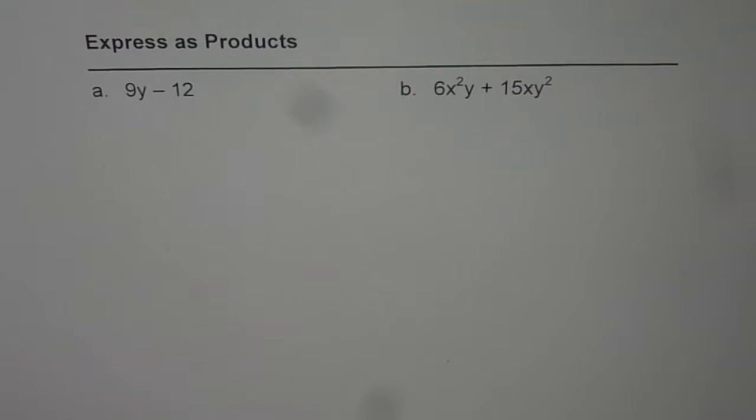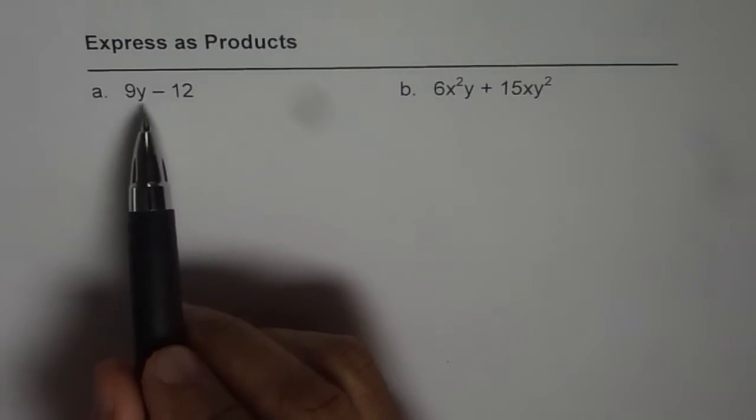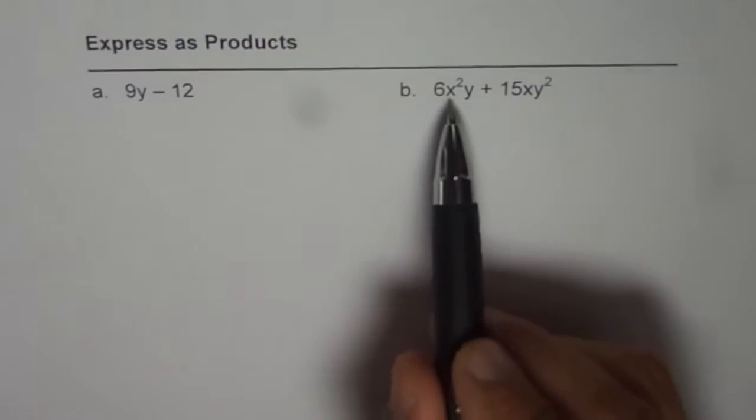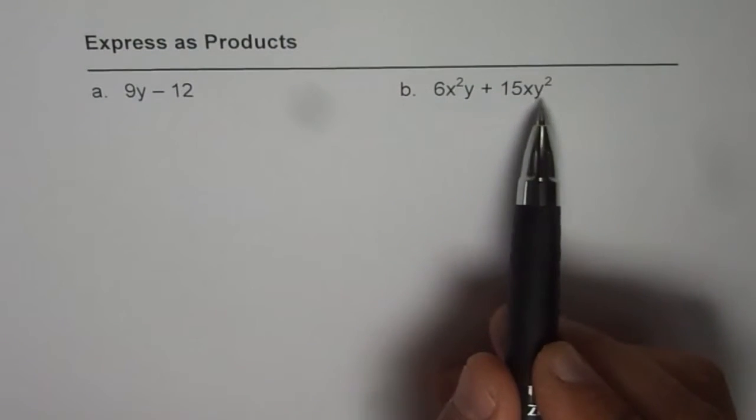Express as products. This really means to factorize. We are given 9y minus 12 as example A, and B is 6x²y plus 15xy².